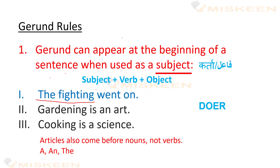Eek or baat note karne wali hai. Articles yani a, an, the — yeh joh words hootay hai, inheh hum articles kehte hai. Yeh humeisha noun ke aage hi aate hai, noun ke pahle hi likhe jatay hai. To agar aap ne dekha ki eek ing word hai aur uske pahle eek article hai, to iska matlab yeh hai ki woh verb nahi, woh eek noun hai — woh eek gerund hai.